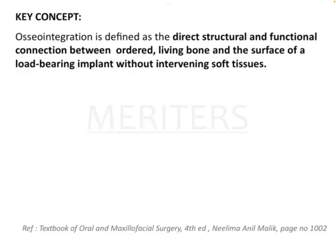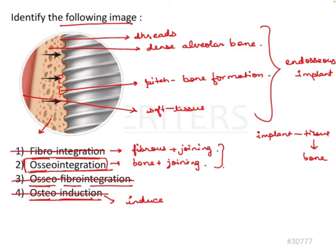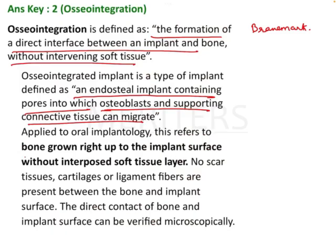Professor Branemark is the forerunner of implants. An osteointegrated implant is a type of endosteal implant containing pores within which osteoblasts and supporting connective tissue can migrate. As we can see in the image, the bone has migrated into the inter-thread distance in the pitch. All the bone has flowed in and the implant has achieved stability because of that. It refers to bone grown right up to the implant surface without an interposed soft tissue layer.